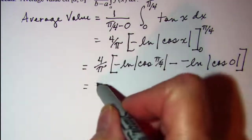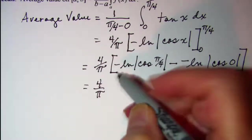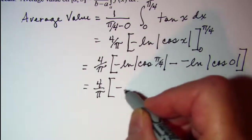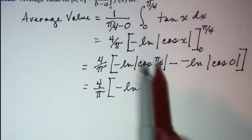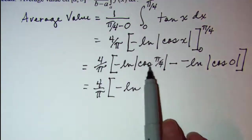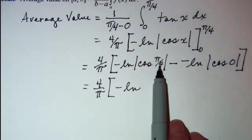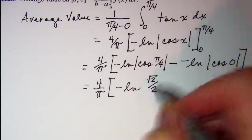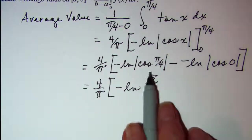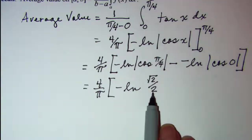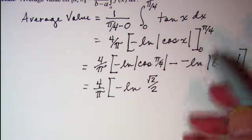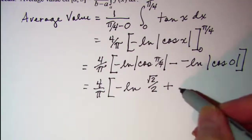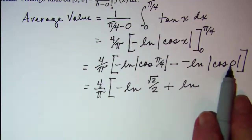So we have 4 over pi and then multiply that by negative ln. Now pi over 4 is 45 degrees and the cosine of pi over 4 is root 2 over 2. Notice I didn't put my absolute values around that because cosine of pi over 4 is a positive root 2 over 2, so I don't need those. Minus minus I'll write that as plus, and then I have ln of cosine 0, which is 1.